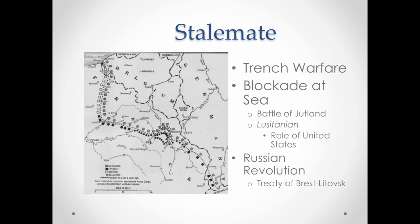Early on in the war, because of trench warfare, there were stalemates. The armies were so embedded that they could not really attack without suffering heavy losses — the armies couldn't move. There were also blockades around various places at sea, and of course the sinking of the British ocean liner Lusitania off the Irish coast, which incensed the United States. At the same time, Russia, who had been an ally, had a revolution of their own and declared a peace treaty at the Treaty of Brest-Litovsk to keep themselves out of the war.